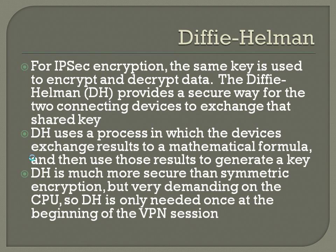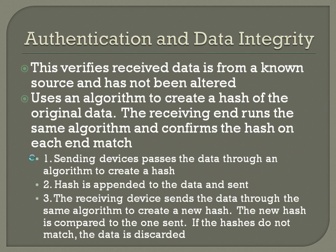And then authentication and data integrity. This verifies that received data is from a known source and has not been altered. Basically, if a router receives a packet, it needs some way of knowing that it didn't receive that packet from a hacker or some kind of man-in-the-middle. It also needs to know that the original packet was not intercepted and altered in some way.